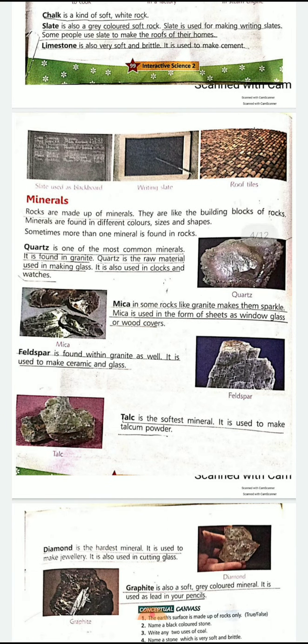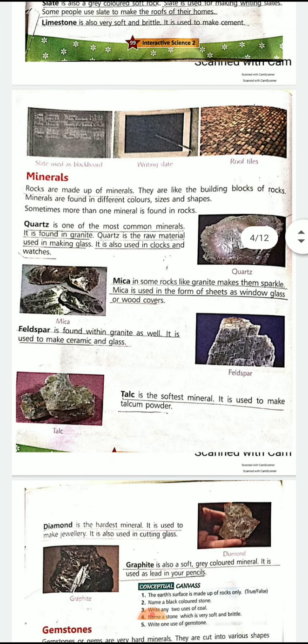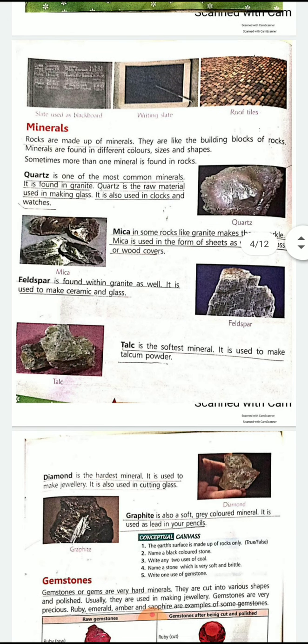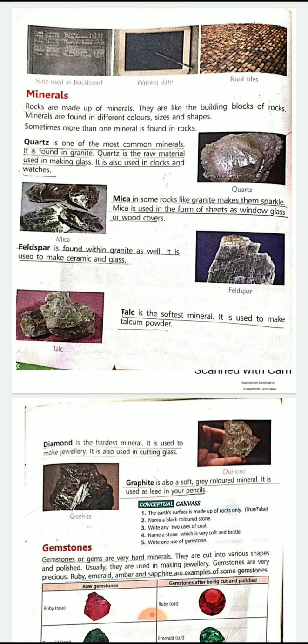Then we studied about minerals. Minerals are more shiny and have different colors, different shapes, and sizes. Examples of minerals are quartz, mica, feldspar, talc, diamond, and graphite.